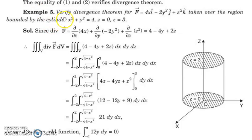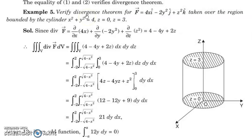The first problem is to verify the divergence theorem for f equal to 4xi minus 2y squared j plus z squared k, taken over the region bounded by the cylinder x squared plus y squared equal to 4, and z equal to 0 to z equal to 3. The cylinder is centered at the origin with radius 2 and height from z equal to 0 to z equal to 3. The surface is our cylinder, with bottom at z equal to 0 and top surface at z equal to 3.